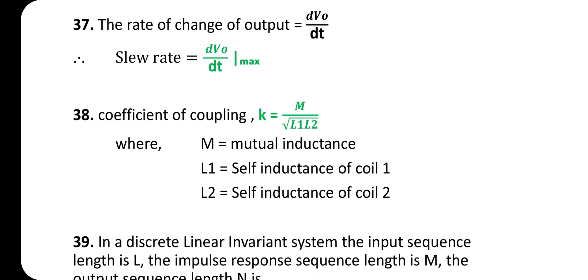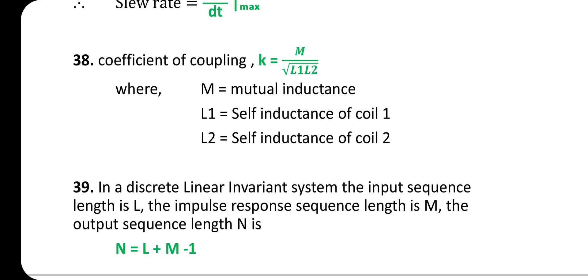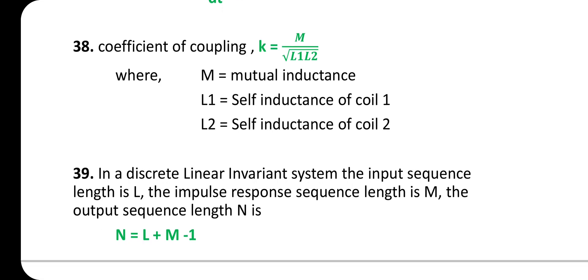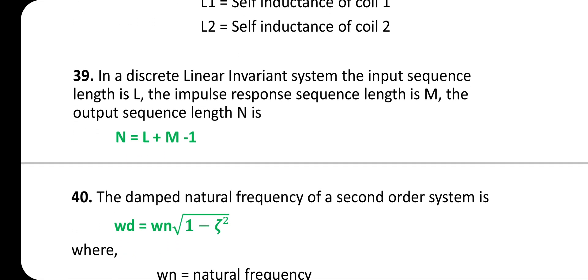Coefficient of coupling: k = M / √(L₁ × L₂), where M is the mutual inductance, L₁ is the self-inductance of coil 1, and L₂ is the self-inductance of coil 2.